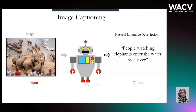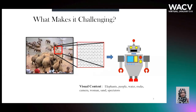Image captioning is a task which involves translating visual information into well-formed sentences in natural language. While humans find it rather easy to construct sentences from images, this task is not as straightforward for machines.